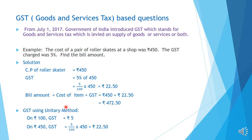This GST we can find using the unitary method also. Here we used the formula method. Using unitary method: 5% means on Rs. 100 the GST is Rs. 5. Total CP is Rs. 450, so on Rs. 450 GST is equal to 5 by 100 into 450. On simplification we also get Rs. 22.50. So GST can be found by either formula or unitary method.